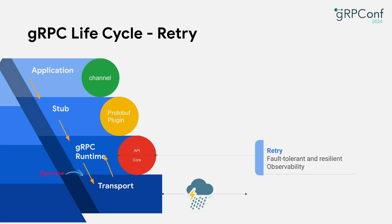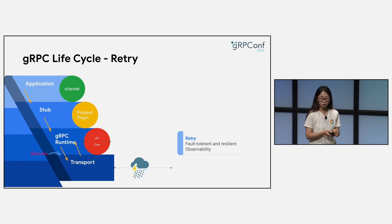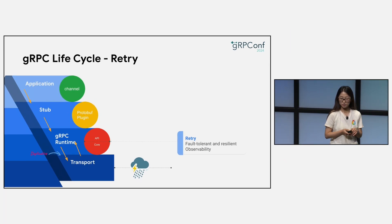By reattempting failed operations, applications can overcome various temporary problems like network or server glitches. The retry component sits in the core above the transport layer, and when a retry happens, it will duplicate a stream on the transport. Users do not immediately notice that retry exists except for increased latency, but with growing support for observability, you can see more information on retries, which is great. Let's dive into the retry logic in more detail.